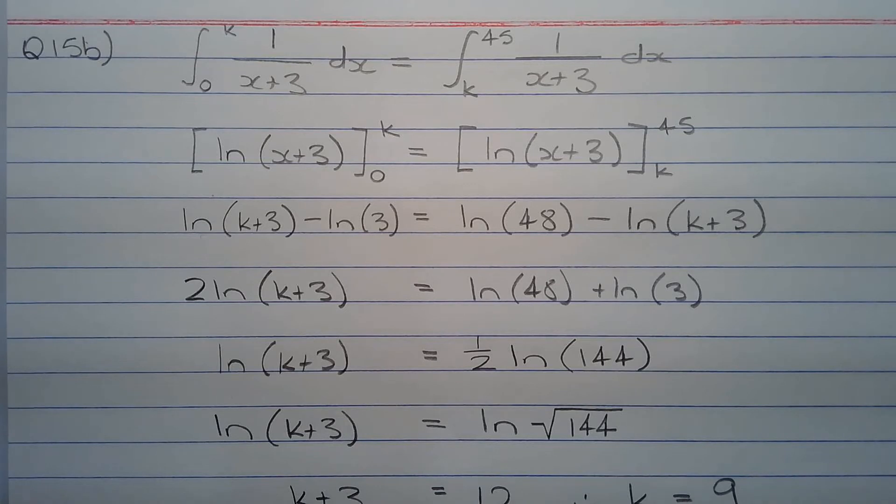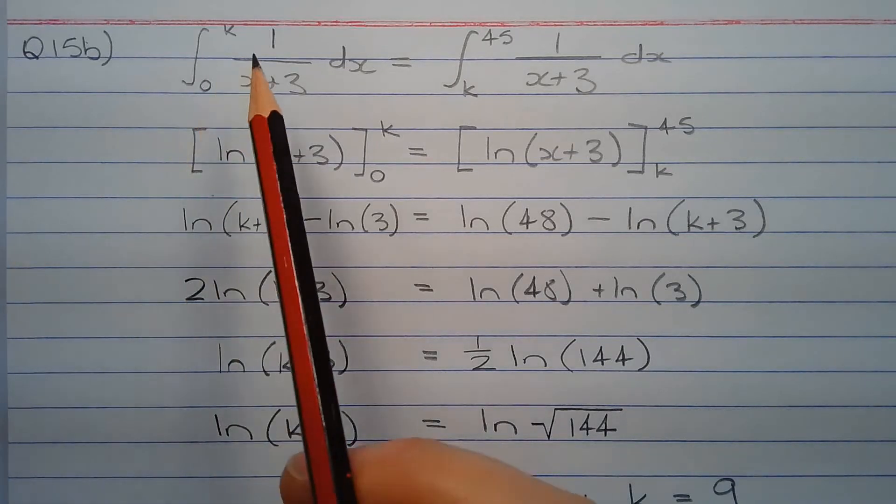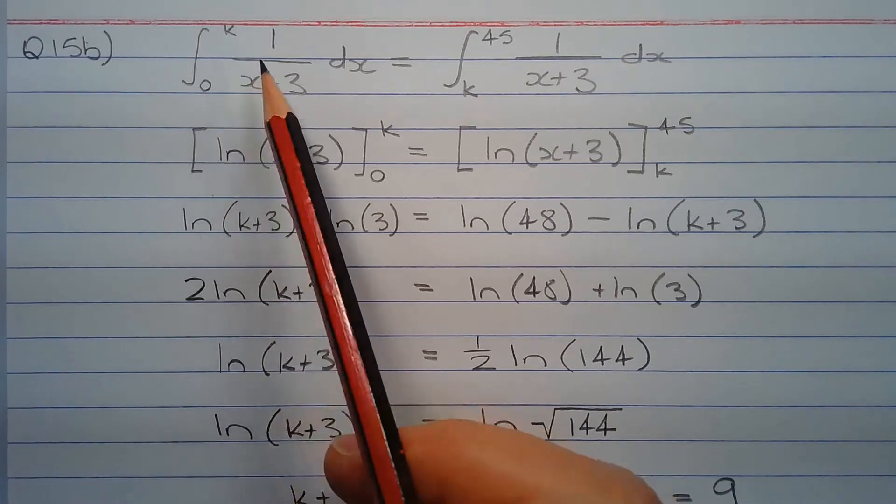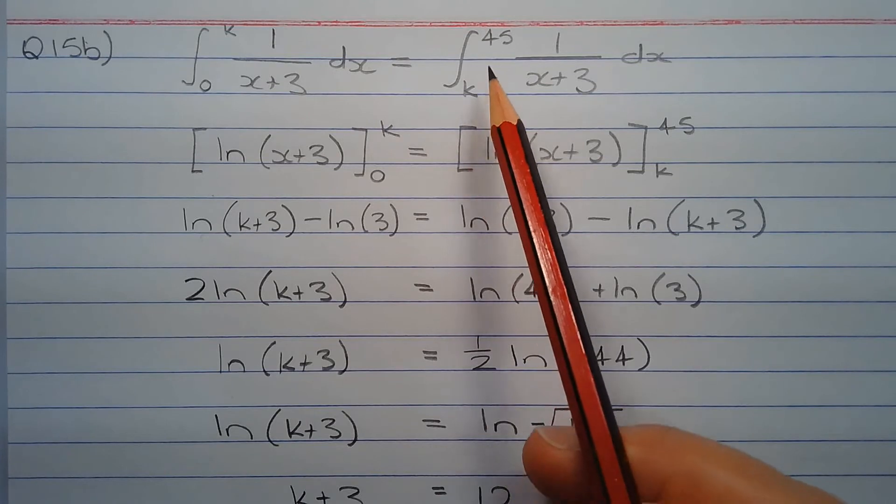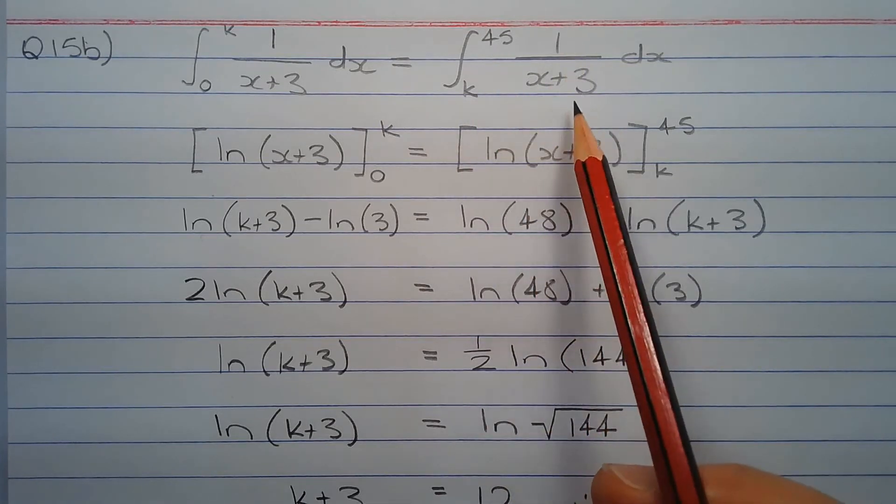Since we are considering an area that is entirely above the x-axis, we can form an equation involving two definite integrals that represent the two equal areas. We have the integral from x equals 0 to x equals k of 1 over x plus 3 dx is equal to the integral from x equals k to x equals 45 of 1 over x plus 3 dx.